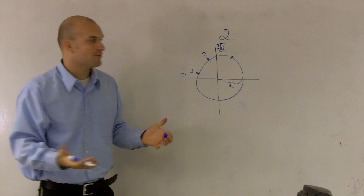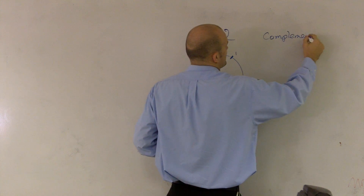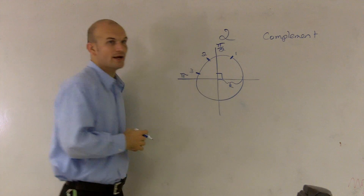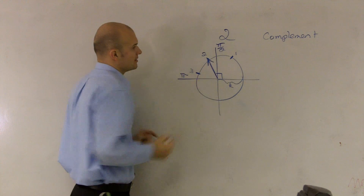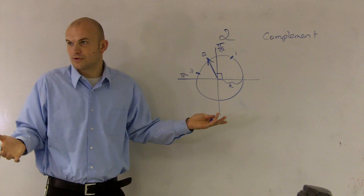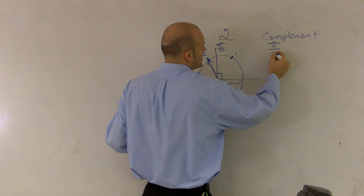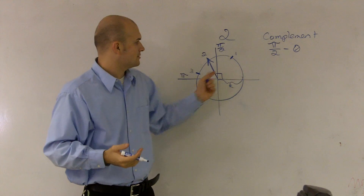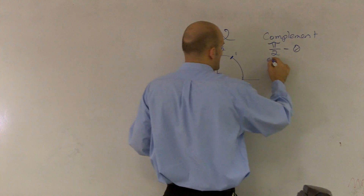So if I say find the complement — remember, complement is what two angles add up to give you 90 degrees. Well, if my first angle is over 90 degrees, I can't have a complement. So I'd have to do — pi divided by 2 minus theta equals your complement. However, this is greater than 90 degrees, so therefore there is no complement for this problem.